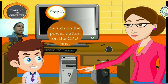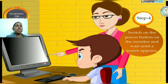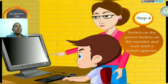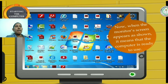Switch on the power button on the monitor and wait until the screen appears. After that, switch on the power button on the monitor, then wait for some time for the screen to appear. Now when the monitor screen appears as shown, it means that the computer is ready to use.